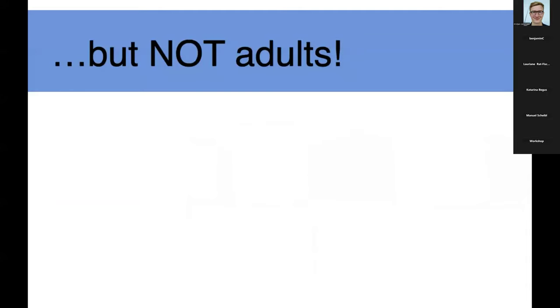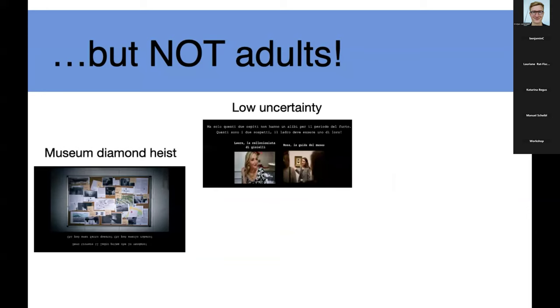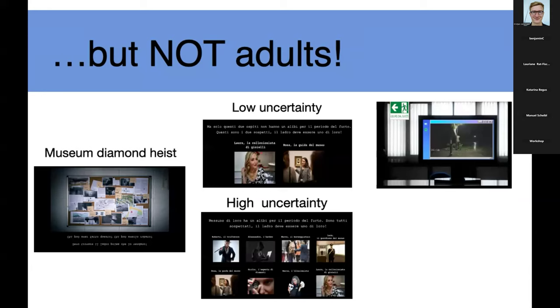And we have tried an embarrassing amount of versions to see whether we could replicate this effect with adults. Spoiler, we didn't manage. The paradigm that looked a little more promising was this one, was a museum diamond heist. Again, very similar, low uncertainty, high uncertainty setup. This time, we didn't have an infinite amount of doors because we thought maybe that's the action that adults find just too tedious. So instead, we had video footage that we simulated, obviously. So very similar to the kind of example I gave at the beginning of this talk. But yeah, not really. So a little bit of a trend, a little bit of a tendency, but barely.